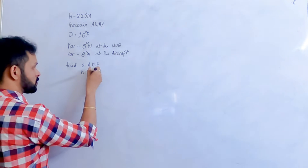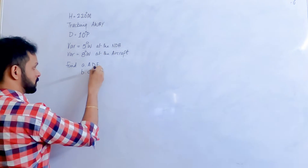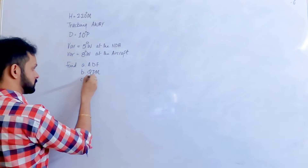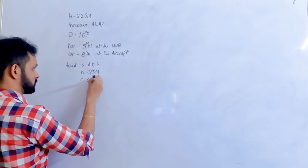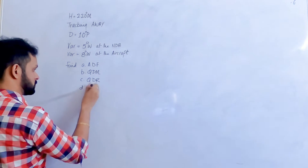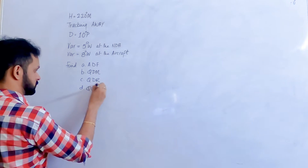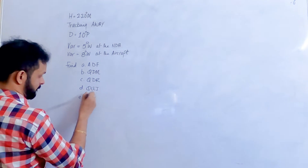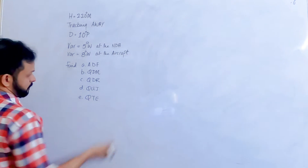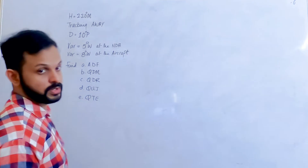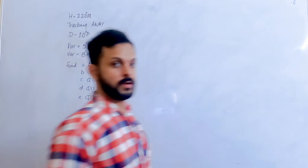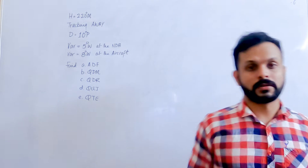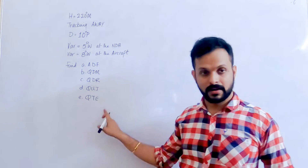Find the QDM, QDR, QUJ, and QT. Now it becomes really important that you should know what these Q-codes are when they ask you questions like this.